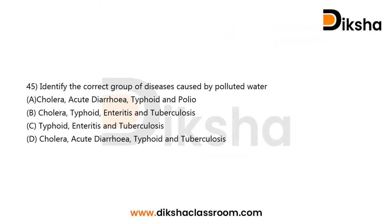Moving to the last question from this set: Identify the correct group of diseases caused by polluted water. Option A is cholera, acute diarrhea, typhoid, and polio. Option B is cholera, typhoid, arthritis, and tuberculosis. Option C is typhoid, arthritis, and tuberculosis. Option D is cholera, acute diarrhea, typhoid, and tuberculosis. It's a direct general knowledge or factual question.